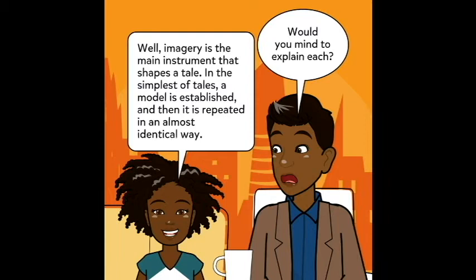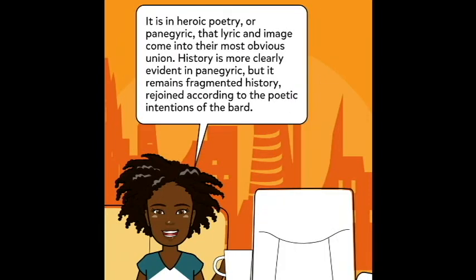Would you mind explaining each? Well, imagery is the main instrument that shapes a tale. In the simplest of tales, a model is established and then repeated in an almost identical way. As in heroic poetry, or panegyric, the lyric and image come into their most obvious union. History is more clearly evident in panegyric, but it remains fragmented history, rejoined according to the poetic intentions of the bard.